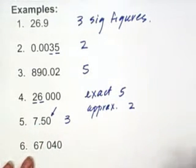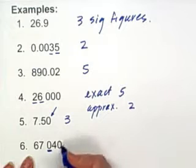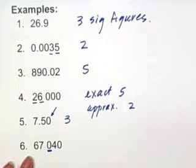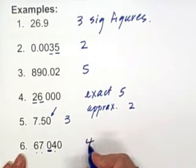And let's assume this last number is approximate. We would count the zero that's within these two numbers. But we do not count the zero at the end. So we have one, two, three, four significant figures here.